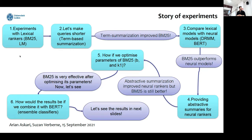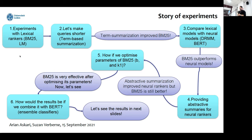Here is the story of the experiments we conducted. In the first step, we started with lexical rankers. We tried BM25 and a language model with two different smoothing options. Based on the literature, we then tried to make queries shorter, and for that, in the first step, we used term-based summarization. We saw that term-based summarization improved BM25.